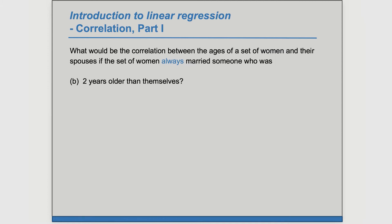Part B: the spouse is always two years older than themselves. This is a very similar example with a strict linear relationship. If the woman is 30, the spouse would be 32. If the woman is 35, the spouse would be 37. Again, we have a very strict linear relationship, and as one goes up, the other goes up. So we have perfect and positive correlation — R equals positive one.